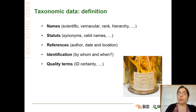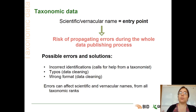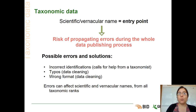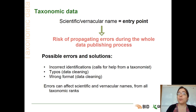And you can also have some quality terms related to taxonomic data, such as the ID certainty. In the case of taxonomic data, scientific and/or vernacular names are the entry point to retrieve and access the data. The risk of propagating errors during the whole data publishing process is really great in the scientific or vernacular name. Below are listed some possible errors and solutions.